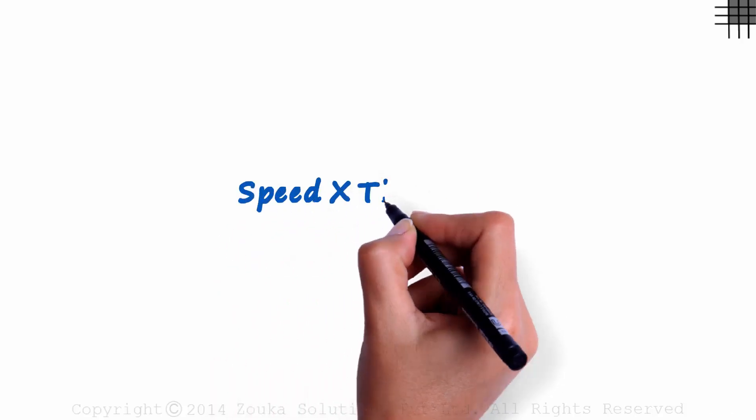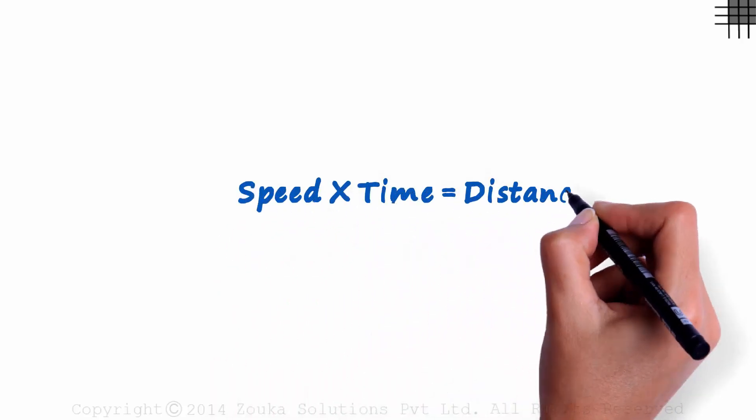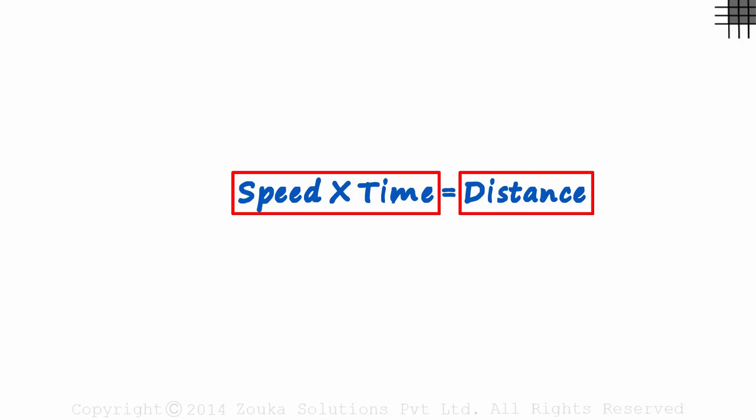We are all aware of the formula: speed multiplied by time equals distance. This gives us the distance. If we want to find the speed, we transpose time to the other side. And if we want to find the time, we transpose speed to the other side.